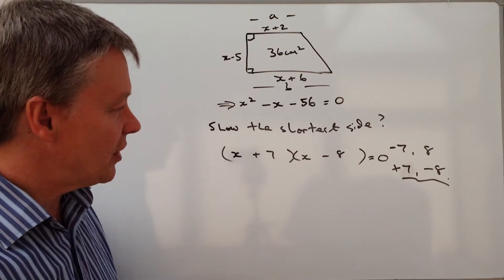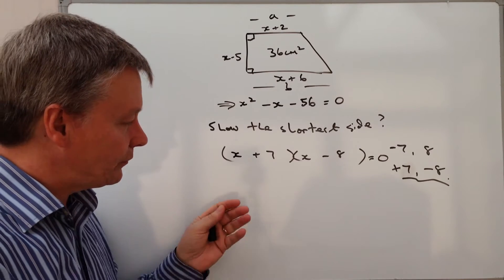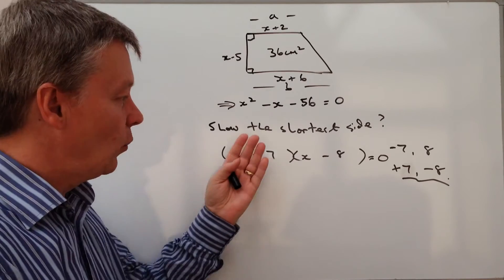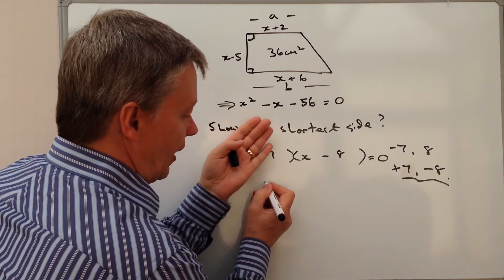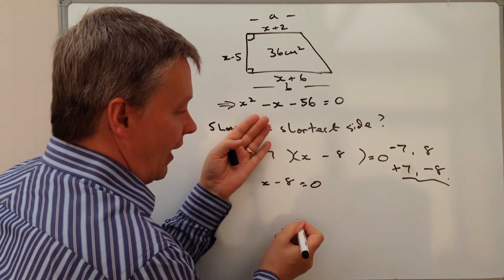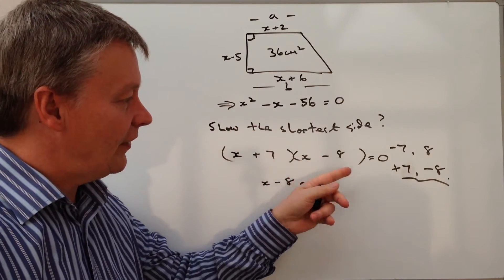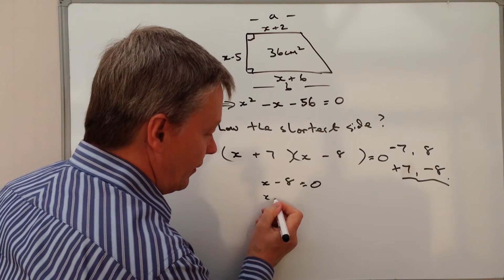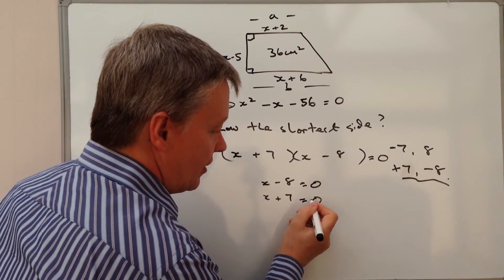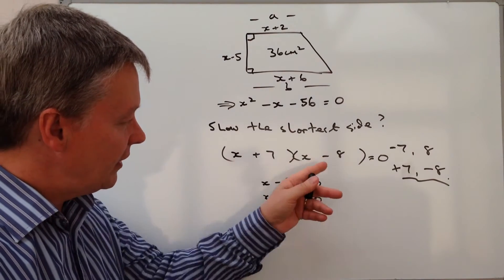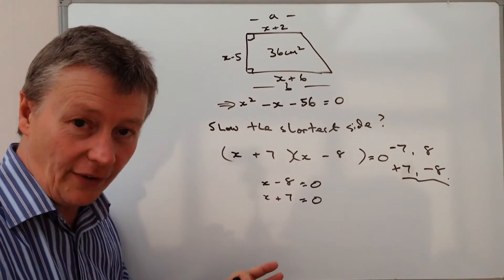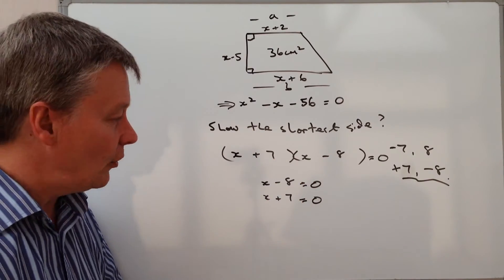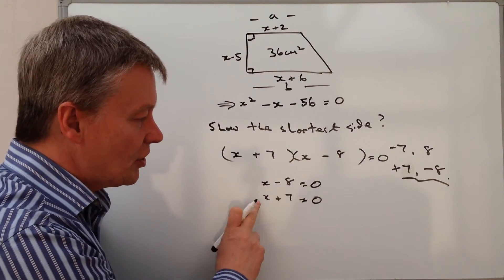So what we've got to do now is work out the values of x. Well, if this plus this as a term is going to be 0, then effectively I've got x minus 8 equals 0. And if this and this are a term 0, then I've got x plus 7 equals 0. So again, you might want to just stop the video, have a little look at that. Please do add a comment below if you're not sure about what I've done with that. But it allows me then to solve for x.